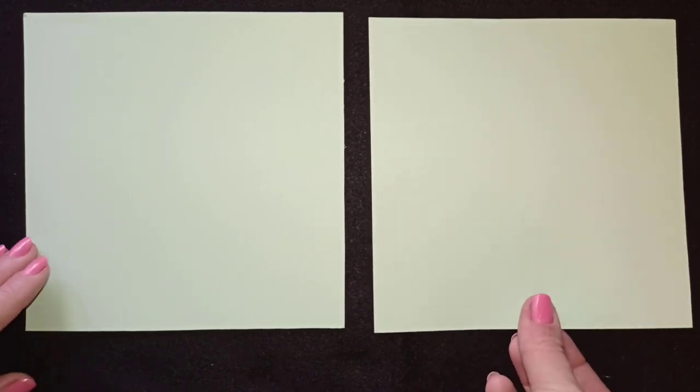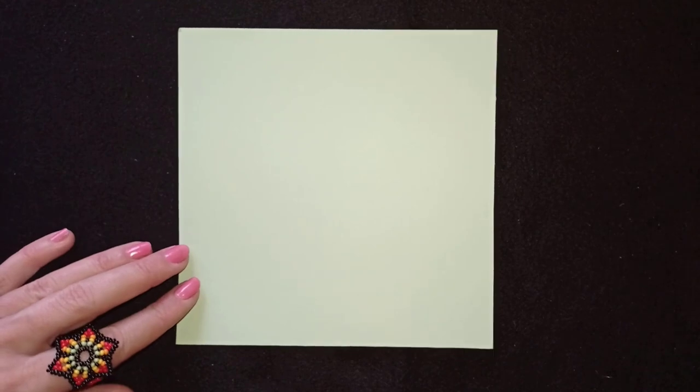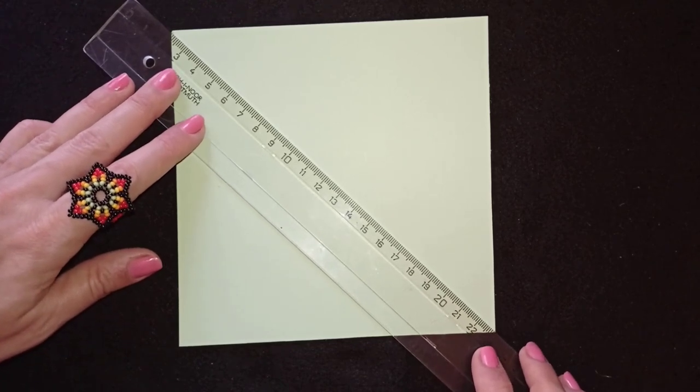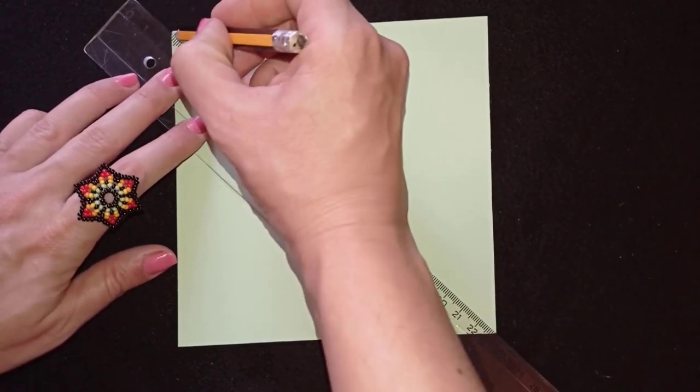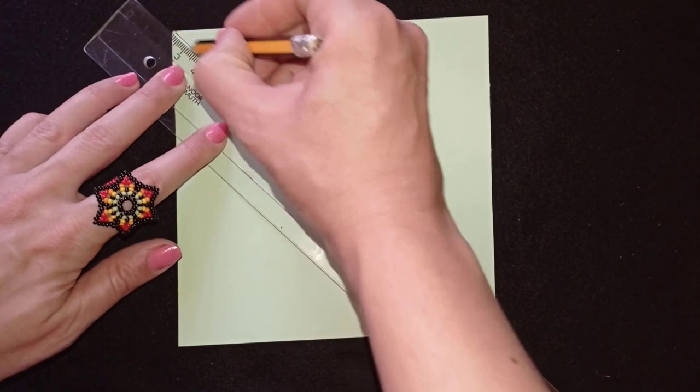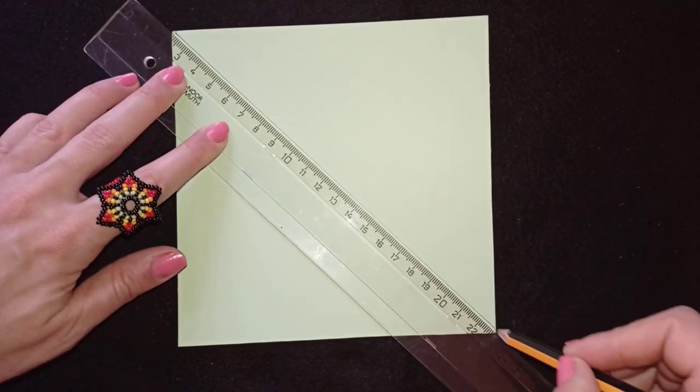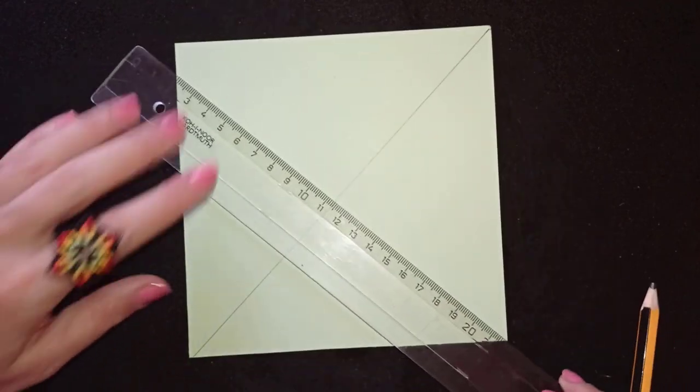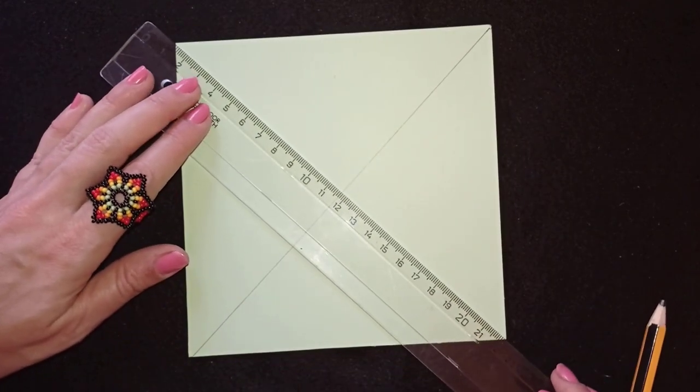So now what I do is that I take one of those squares and I want to find the center. That is why I need my ruler. I go with it like this from end to end in one direction. Don't worry this won't be visible because this will be on the inner side of our box.